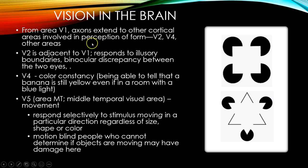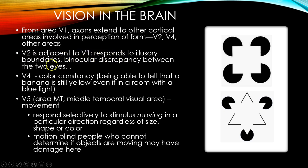From area V1, axons extend to other cortical areas involved in perception of form — V2, V4, V5, and many others. Vision is really the sense we know the most about. V2, or secondary visual cortex, is adjacent to V1, and it responds to illusory boundaries. A picture might make you say you see a square or a triangle even though there isn't really one there — your brain is filling in the details for this illusory boundary. That seems to be one thing V2 is responsible for.